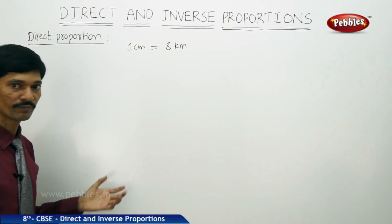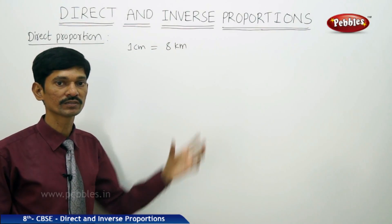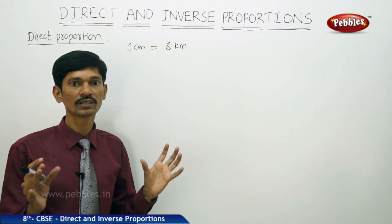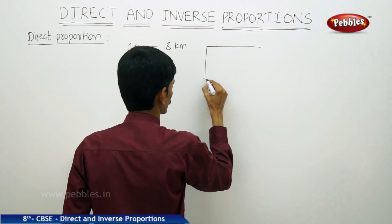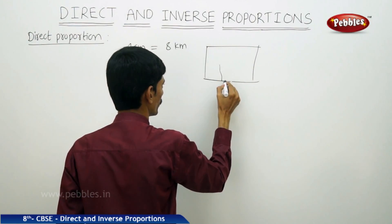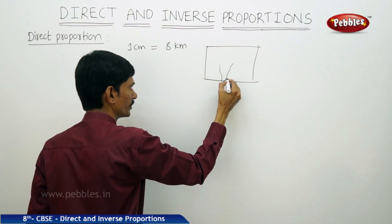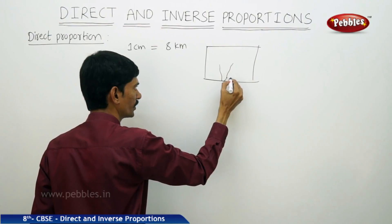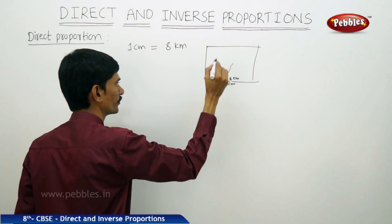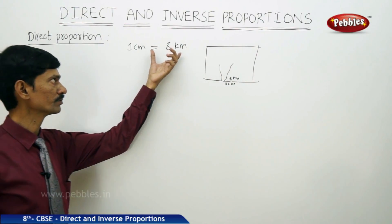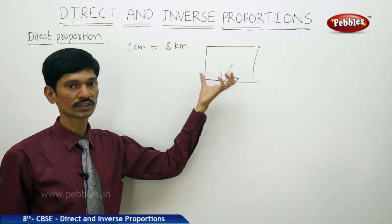A map is the miniature representation of very large regions — we are minimizing the actual region and showing it on the map. For example, if we want to show India on this map, the distance between two points is eight kilometers, then we will show only one centimeter on the map. We are choosing a scale; eight kilometers may be 10 or 100 kilometers, but we choose values as per our convenience.